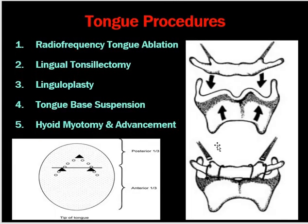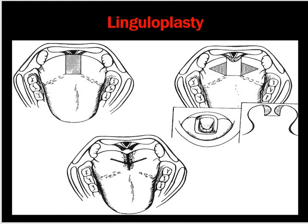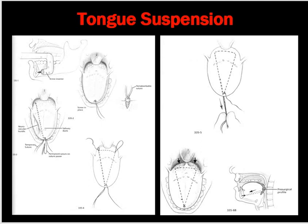Tongue-base procedures include radiofrequency tongue ablation, where the bulky tongue tissue is reduced; lingual tonsil removal; linguloplasty; and tongue-base suspension. In linguloplasty, when there is a bulky posterior tongue, part of the tongue base is removed and sutured, or radiofrequency ablation is used to improve the airway. Tongue suspension involves suspending the tongue to the mandible to keep the airway open.